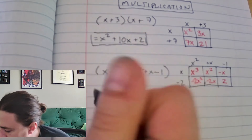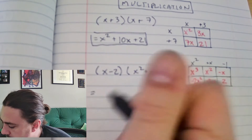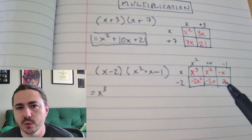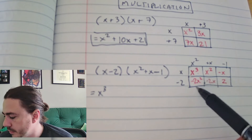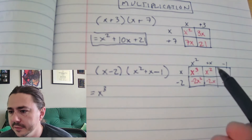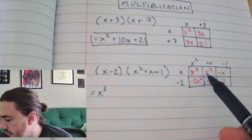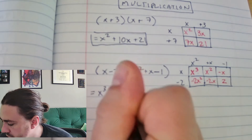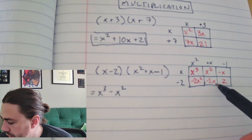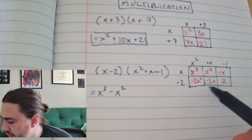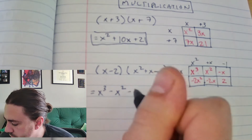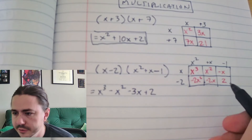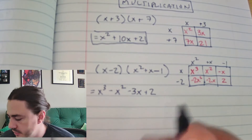My biggest degree term is x cubed — no like terms. Then my quadratic terms: x squared plus negative 2x squared equals negative x squared. Then my linear terms: negative x plus negative 2x gives negative 3x. And my constant is just plus 2. So the result is x cubed minus x squared minus 3x plus 2.